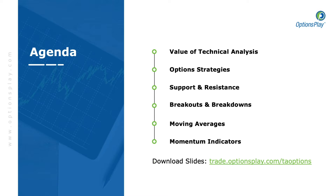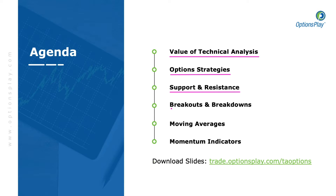We'll start off with an understanding of the value of technical analysis, because I want to make sure everyone understands why I use technical analysis in my trading and what benefits it provides me as an options trader. Then we'll take a look at the main option strategies — three core basic strategies. We'll look at four popular methods of technical analysis: basic support and resistance, breakouts and breakdowns, moving averages, and momentum indicators like RSI and MACD.